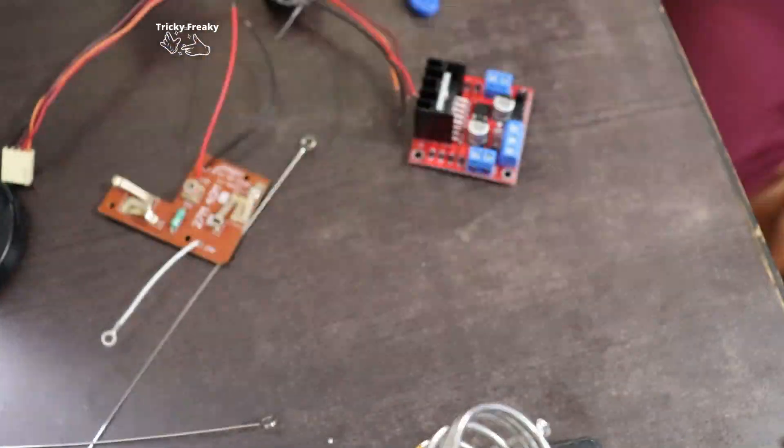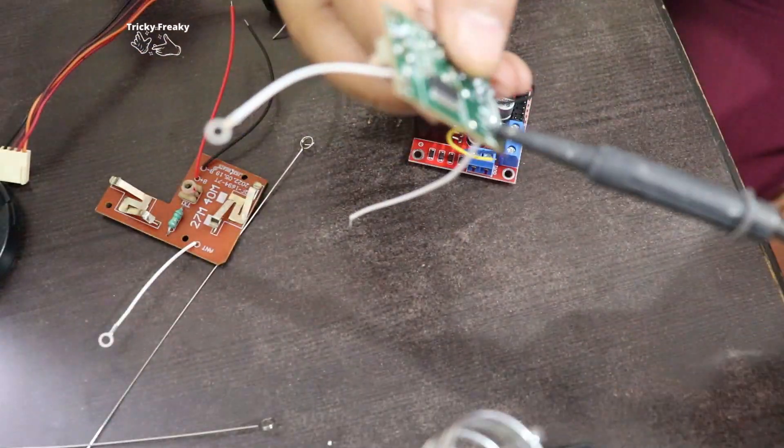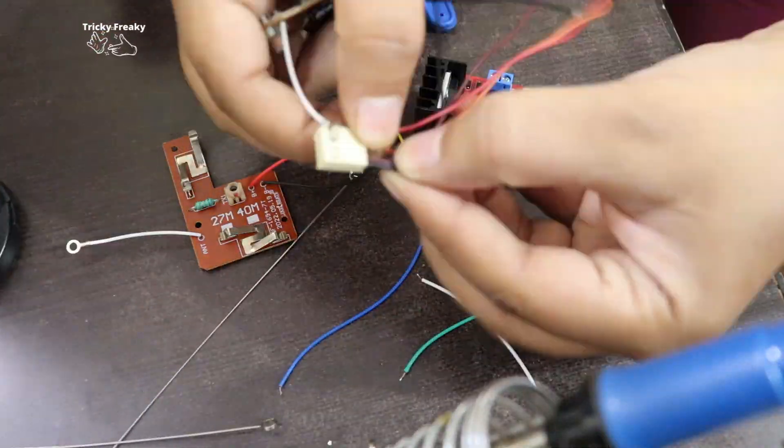I'll desolder all the wires from the receiver, which are for the motor one by one, then take them out.